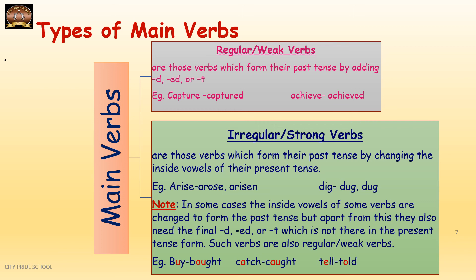However, there is an exception. Look at 'buy' which changes to 'bought,' 'catch' which changes to 'caught,' and 'tell' which changes to 'told.' You might think these are irregular verbs because the inside vowel changes, but they are actually regular verbs — because at the end there is a T. So if D, ED, or T appears at the end, even if the inside vowel also changes, that verb is still a regular or weak verb. That is the key difference between regular and irregular verbs.